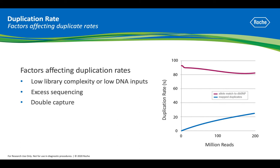Performing a double capture, or back-to-back captures using the same probe set, can also increase duplication rates. However, especially for smaller panels, the double capture can increase the on-target rate. Therefore, a trade-off for on-target reads and duplication rates should be considered for these panels.